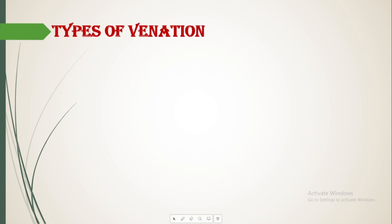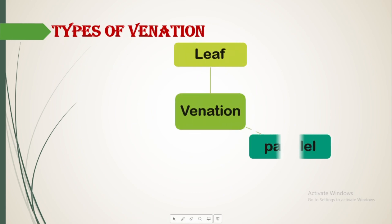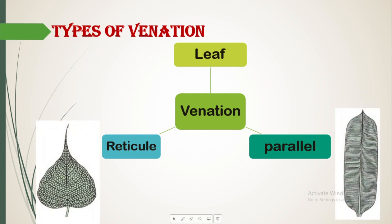Next, we have types of venation. Venation means the manner or pattern in which veins on the leaves are arranged. We basically have two types of venation. One is parallel venation and the other is reticulate venation. In parallel venation, veins of the leaves are parallel to each other, as you can see in the image. And in reticulate venation, the veins are distributed all around the leaf, not parallel to each other — they are spread in a random manner.